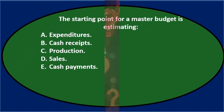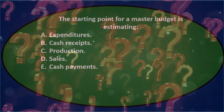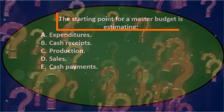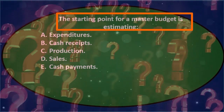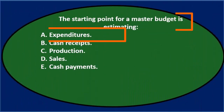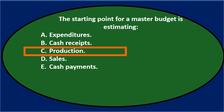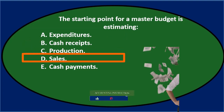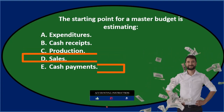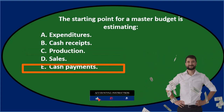Next question: The starting point for a master budget is estimating — A. Expenditures, B. Cash receipts, C. Production, D. Sales, E. Cash payments.